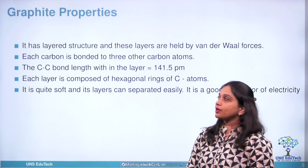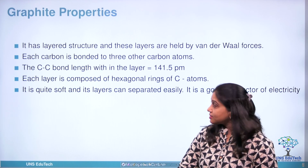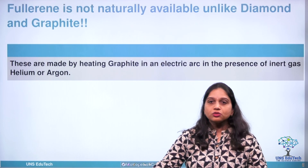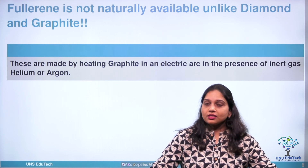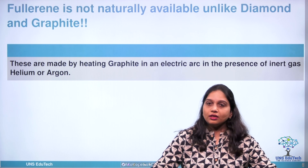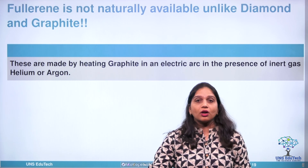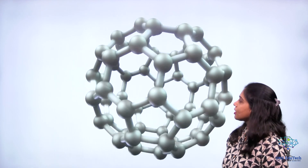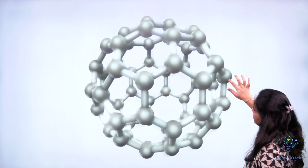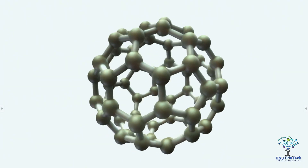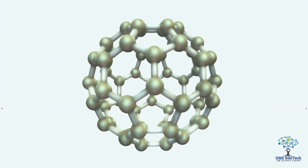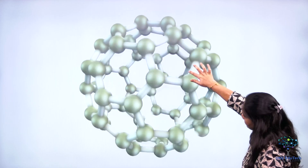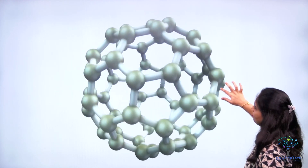Now let us study another crystalline allotropic form of carbon: fullerene. Unlike diamond and graphite, it is not a naturally occurring allotropic form. When graphite is heated in an electric arc in the presence of helium or argon, a new allotropic form called fullerene is obtained. It is arranged in a ball-like cage structure where the carbon atoms are bonded with alternating single bonds and double bonds, and you can see both hexagonal and pentagonal patterns arranged in a ball-like structure.